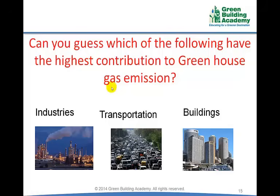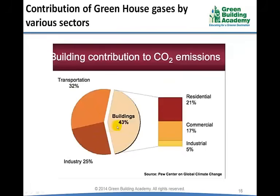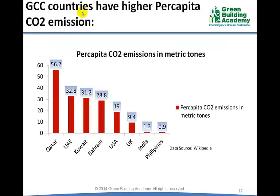Can you guess which has the highest contribution to greenhouse gas emissions — buildings, industries, or transportation? I have asked this question in many classes. The most frequent answer I get is industries or transportation. But the reality is that buildings are the major contributors of greenhouse gas emissions. Buildings contribute 43%, transportation 32%, and industries 25%. There are many candidates from GCC countries, so let us look at some specific statistics related to these countries.